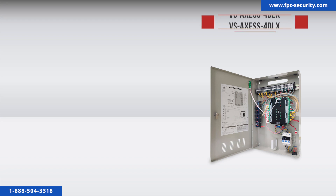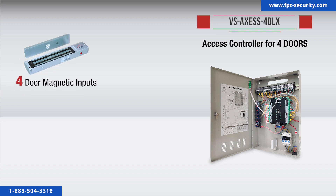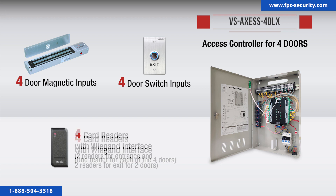The VS Access 4DLX version 2 is an access controller for four doors. This system can connect up to four door magnetic inputs, four door switch inputs, and four card readers with Wiegand interface — one reader for each of the four doors, or two readers for entrance and two readers for exit for two doors.